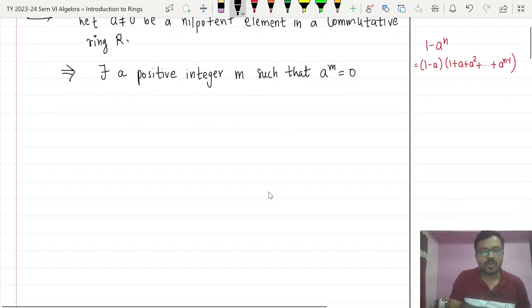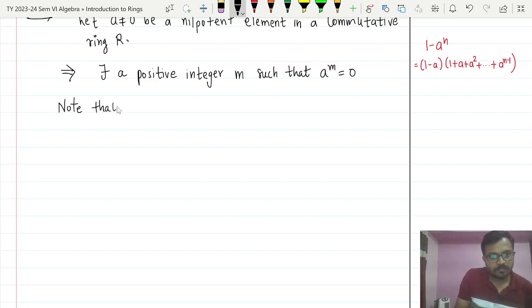Now let us note one thing. Note that what will be 1 minus a raised to m. I have written a formula here. This is a well-known formula. What is 1 minus a raised to n? It is 1 minus a multiplied by 1 plus a plus on up to a raised to n minus 1.